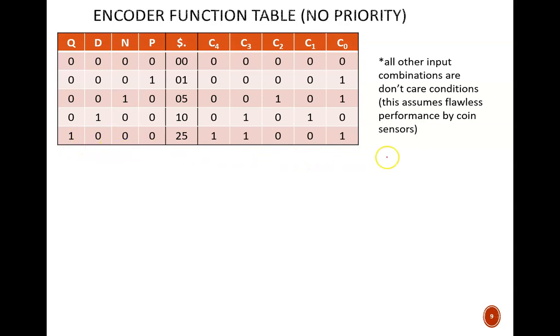This is a big assumption. It is how the machine should work, but machines don't always work perfectly. It isn't hard to imagine a situation where the quarter signal is stuck high while a new dime is added. With all these don't-care conditions, we aren't designing for that possibility. Regardless, this is the function table which helps us understand the purpose of the encoder.